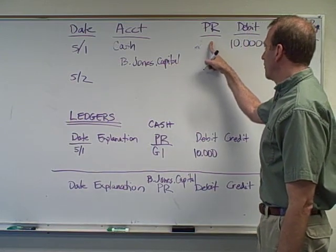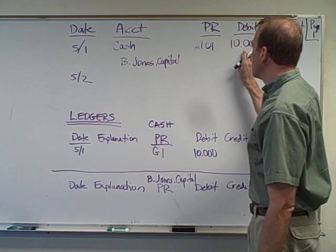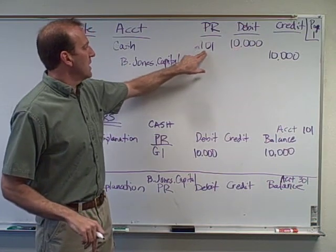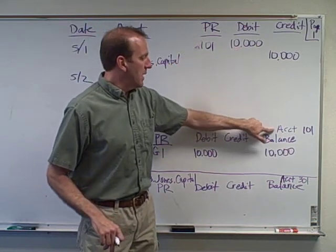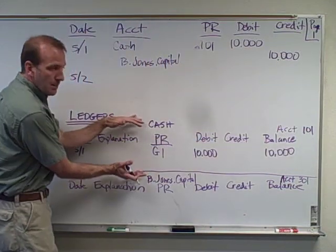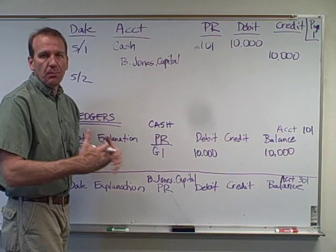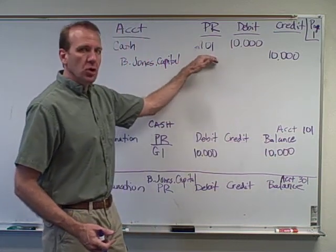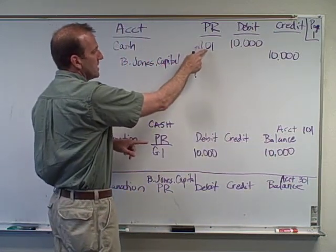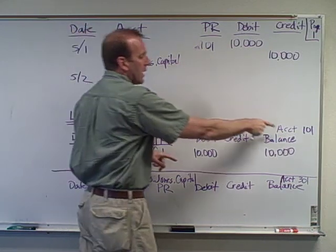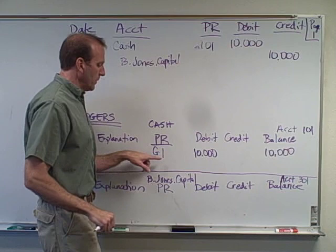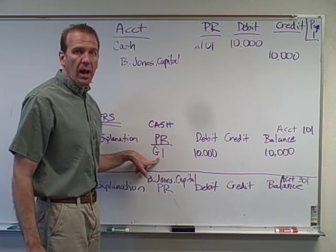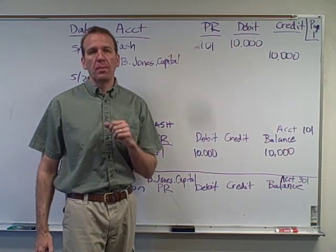Up here in the journal it has a posting reference — what I'm going to put is where this dollar amount is going. Accountants know that this amount has to go to an account, so I'm going to put down account 101, which is my cash account. This is going to be a separate page, a separate book — a separate ledger page that tracks the cash balance. So right now my cash balance has $10,000. I cross-reference it: 101 tells me account number 101, so I go to ledger 101. And if I'm looking at the ledger and want to know where the $10,000 came from, I look at G-1 — general journal, page one.